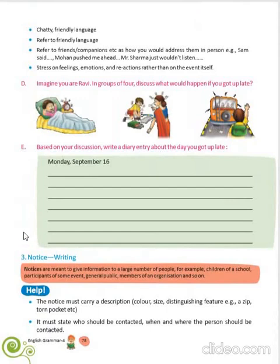Now come to C. You have to imagine yourself as Ravi. In groups of four, you have to discuss what would happen if you caught a plate. This one you have to do yourself. Now come to E. Based on your discussion, you have to write a diary entry about the day when you caught a plate. This one also you have to do yourself as per your discussion.